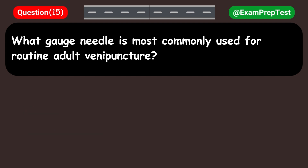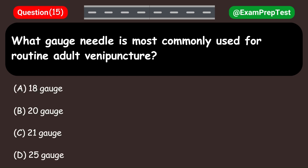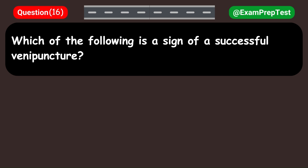What gauge needle is most commonly used for routine adult venipuncture? A. 18 gauge. B. 20 gauge. C. 21 gauge. D. 25 gauge. Answer: C. 21 gauge.